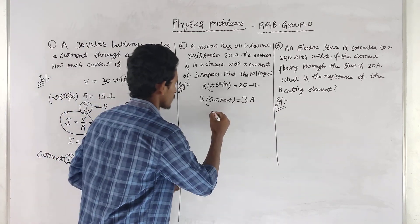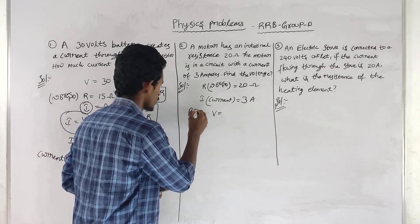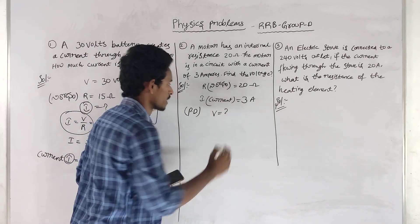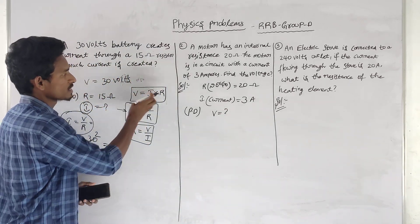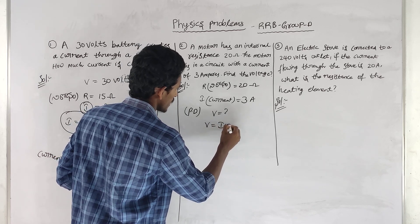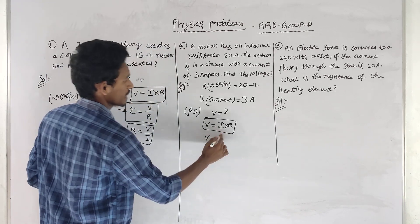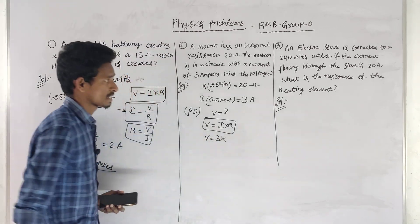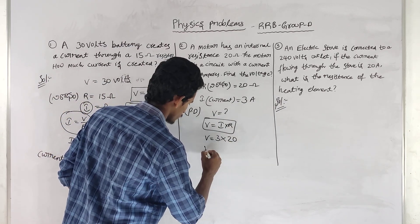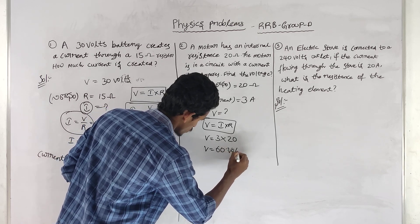This is the same formula: V is equal to IR. We use this formula. V is equal to I into R.